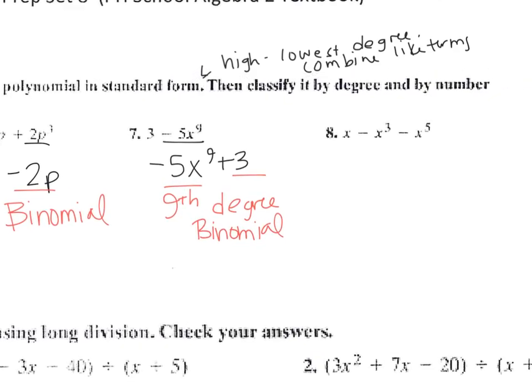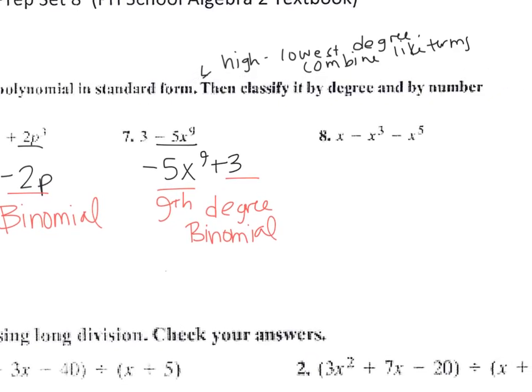And then number 8, I'm going to write it in order, so it's negative x to the 5th, negative x cubed, and then this is a positive x. It's 5th degree, so we call it a quintic. It has 3 terms, so it's a trinomial.